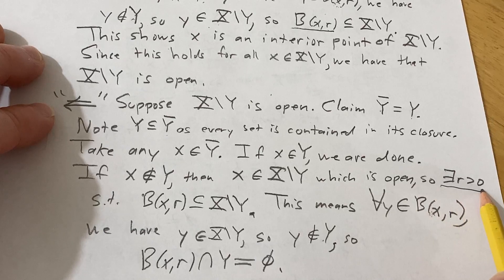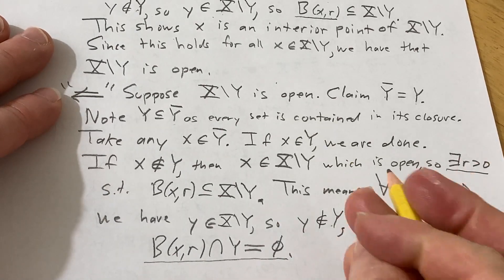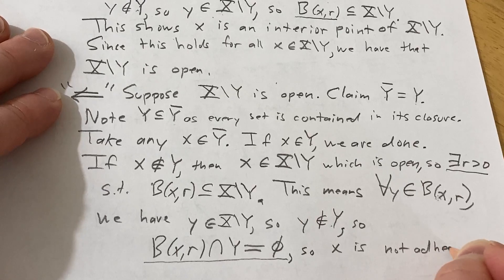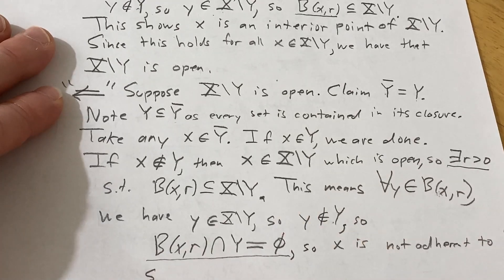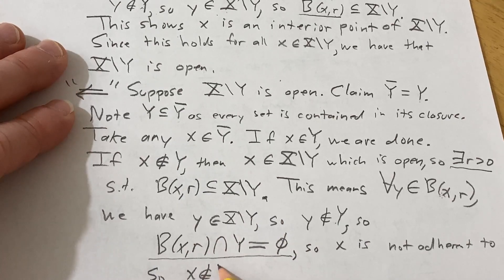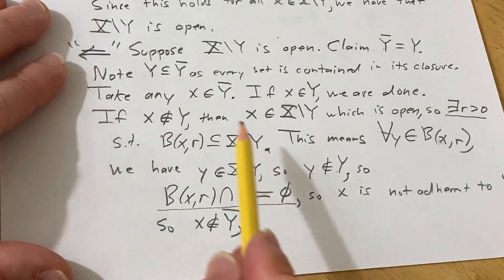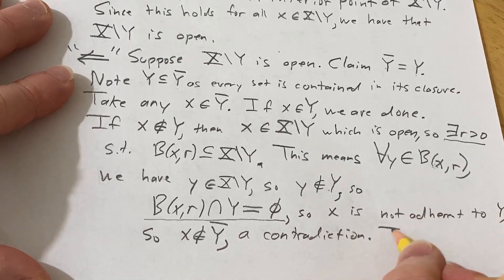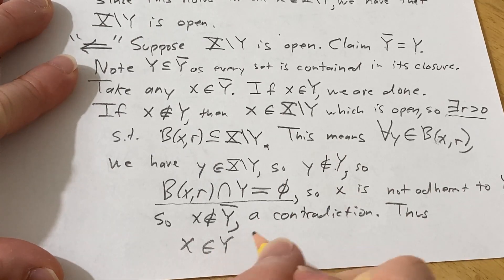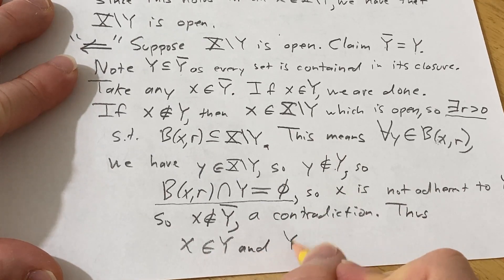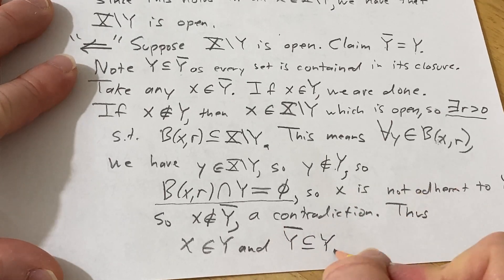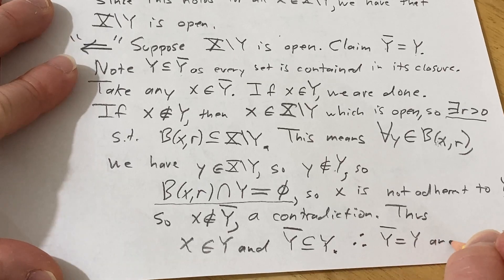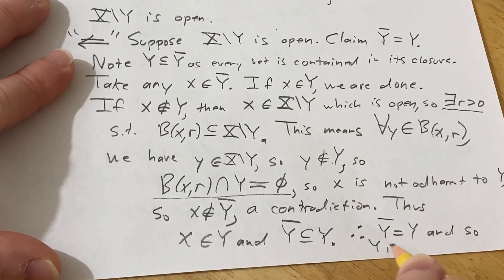We have shown there exists R greater than zero such that this intersection is empty, which means X is not adherent to Y. Therefore X is not in the closure of Y — a contradiction, since we assumed it was. Thus X must be in Y, the closure is contained in Y, and by double inclusion the closure equals Y, so Y is closed.